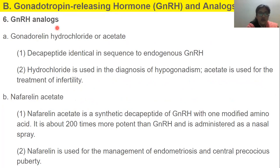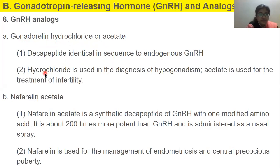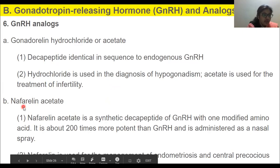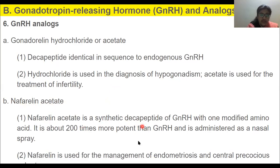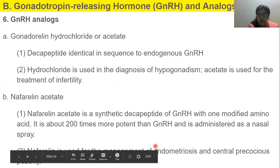GnRH analogs mimic the hormone's activity. Gonadorelin hydrochloride or acetate is a decapeptide identical in sequence to endogenous GnRH. The hydrochloride formulation is used in the diagnosis of hypogonadism, while the acetate formulation is used for treatment of infertility. Nafarelin acetate is a synthetic decapeptide of GnRH with one modified amino acid — it is about 200 times more potent than GnRH and is administered as a nasal spray.